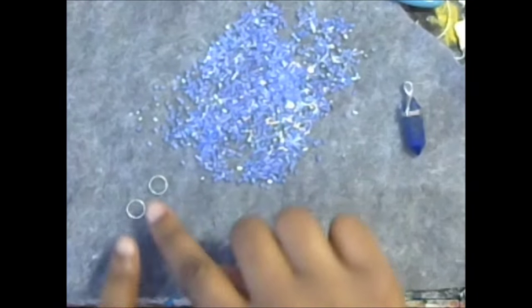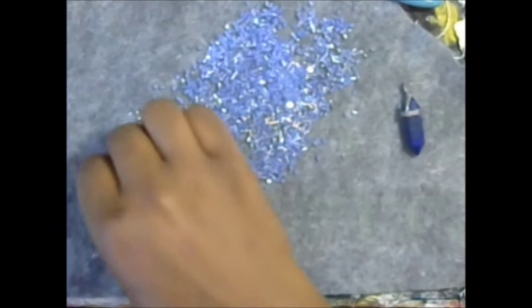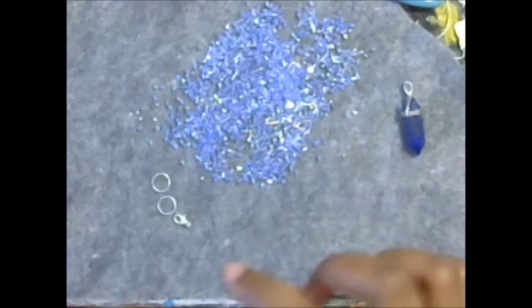And then I have two jump rings here. I also have two little crimp beads. You can't really see them. And then I have a lobster clasp too.